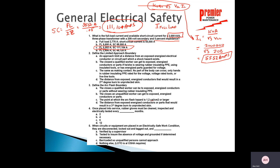Now some definitions from NFPA 70E. Define the limited approach boundary. One possible answer is: an approach limit at a distance from an exposed energized electrical conductor or circuit part at which a shock hazard exists. Another option described the closest a qualified worker can get using rubber insulated gloves and PPE — but that would be the restricted approach boundary. The answer is: it's the approach limit distance where you must start being concerned about shock hazard analysis.